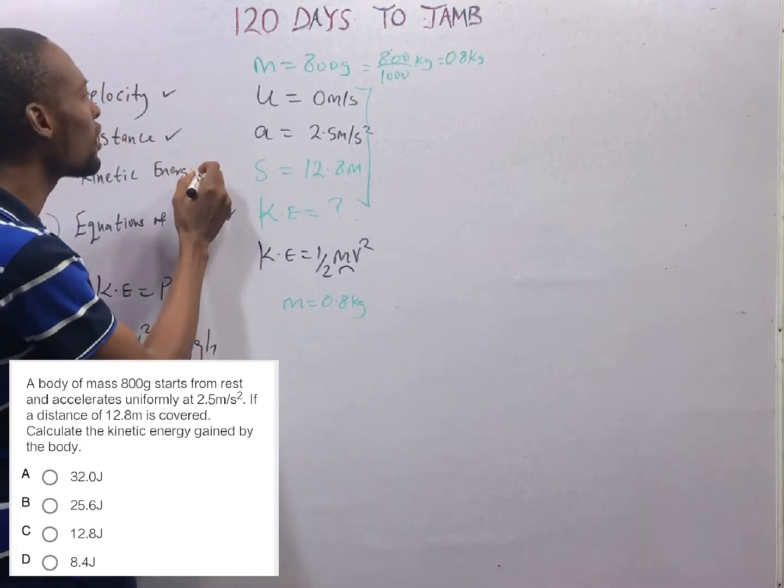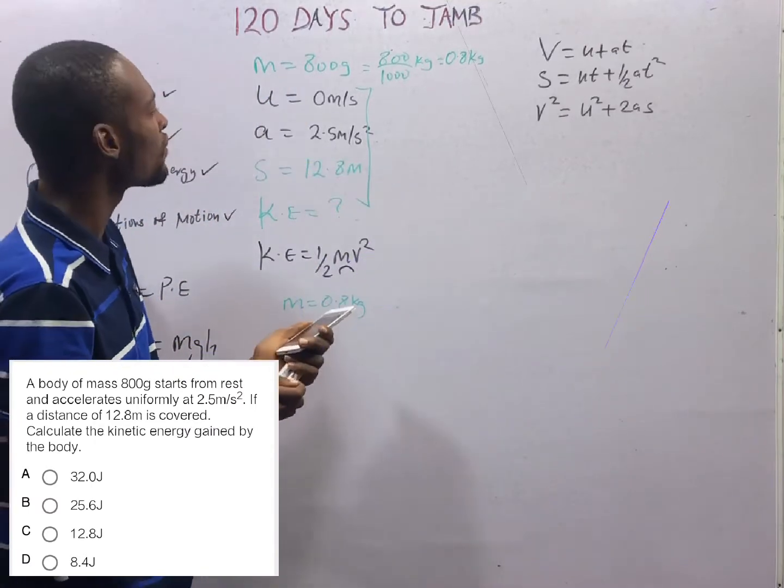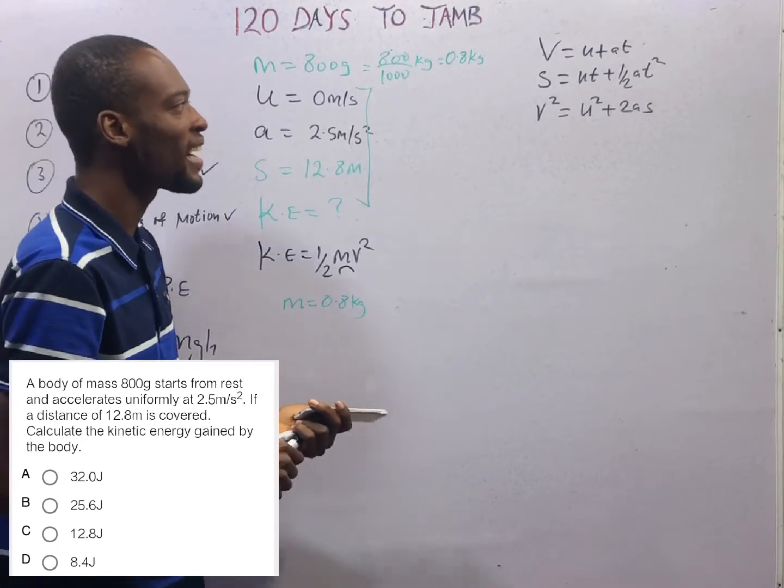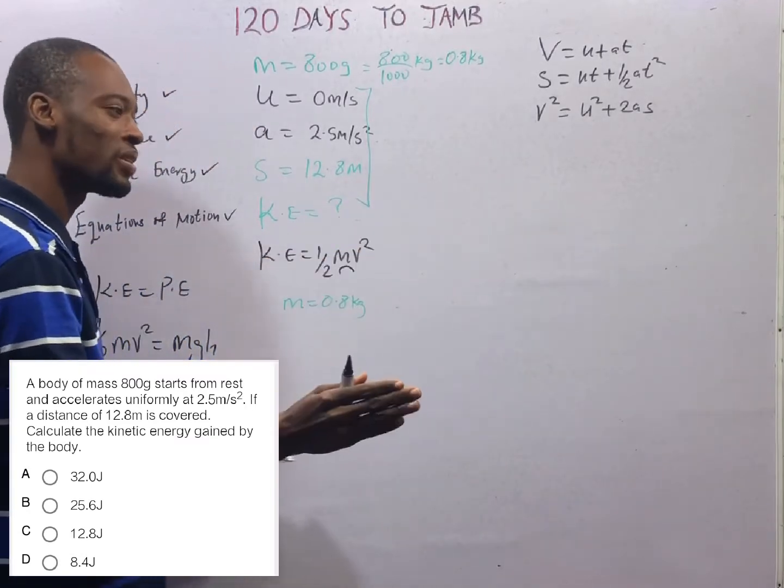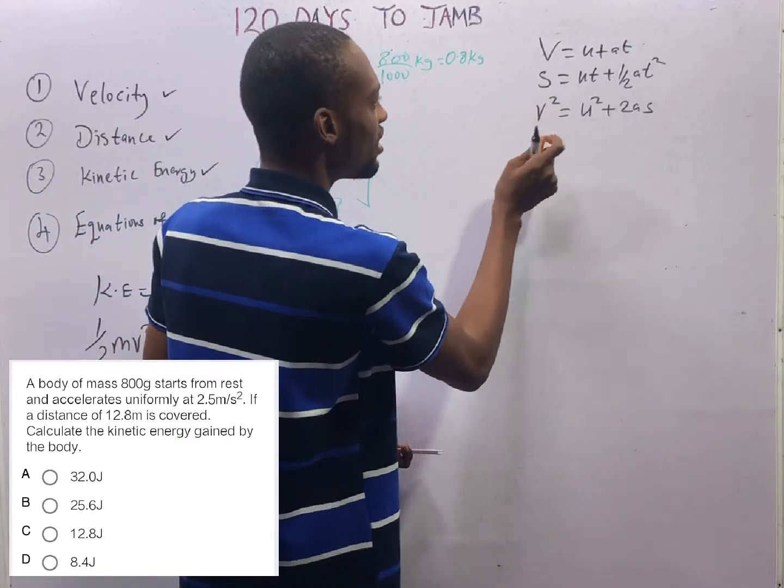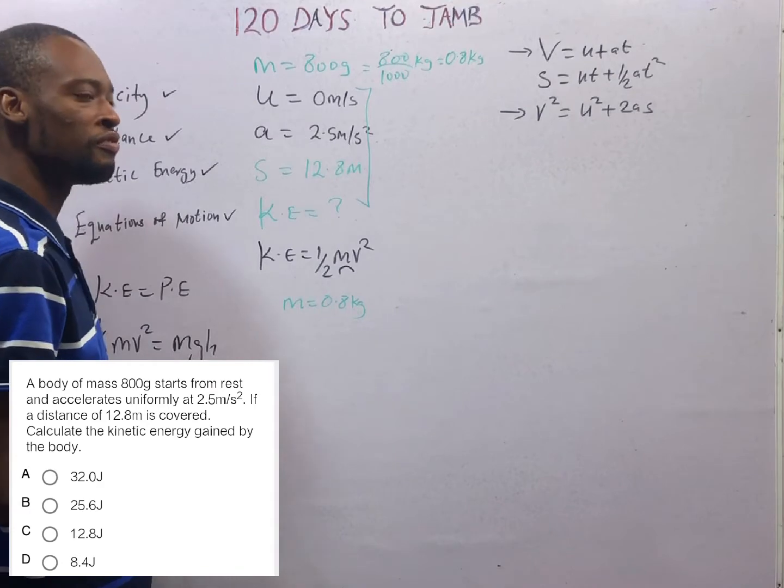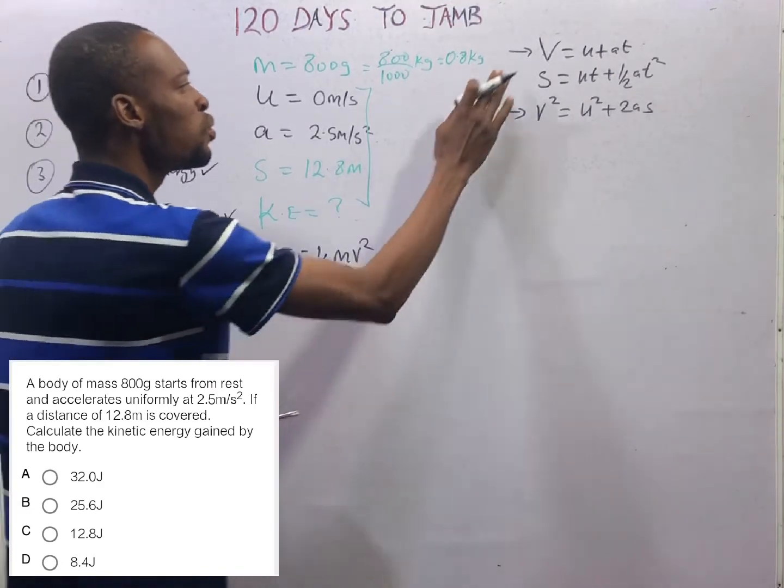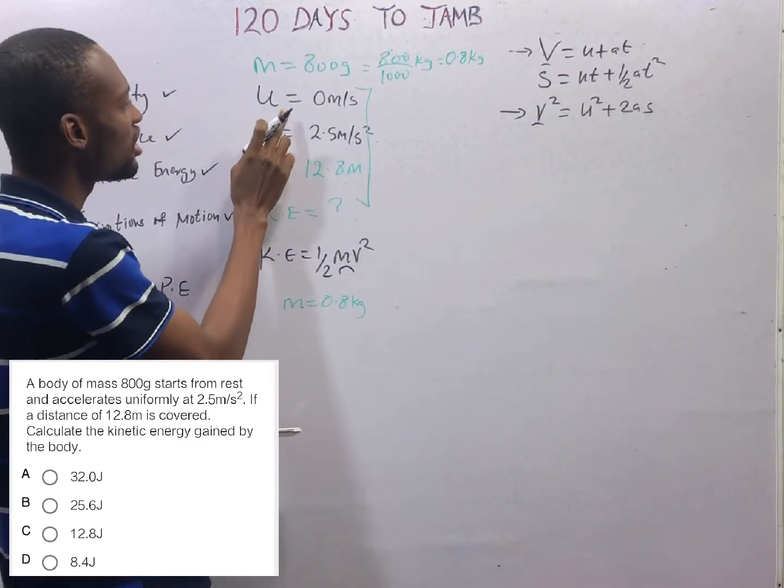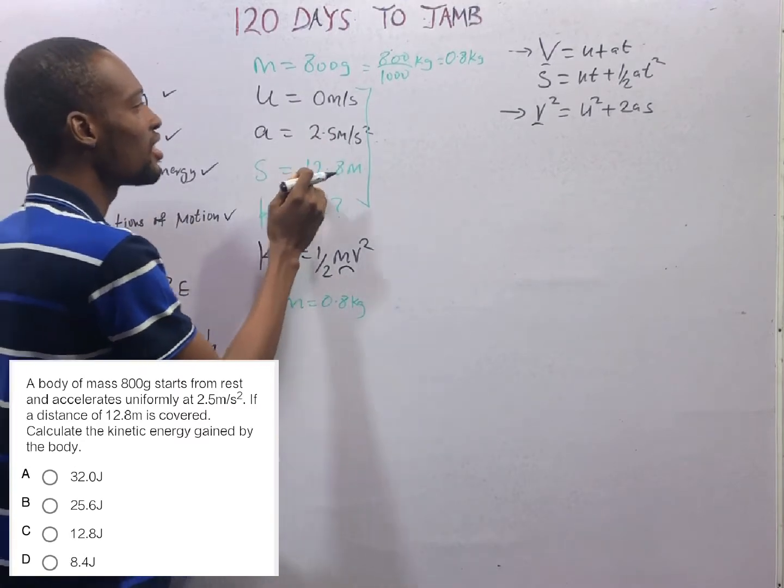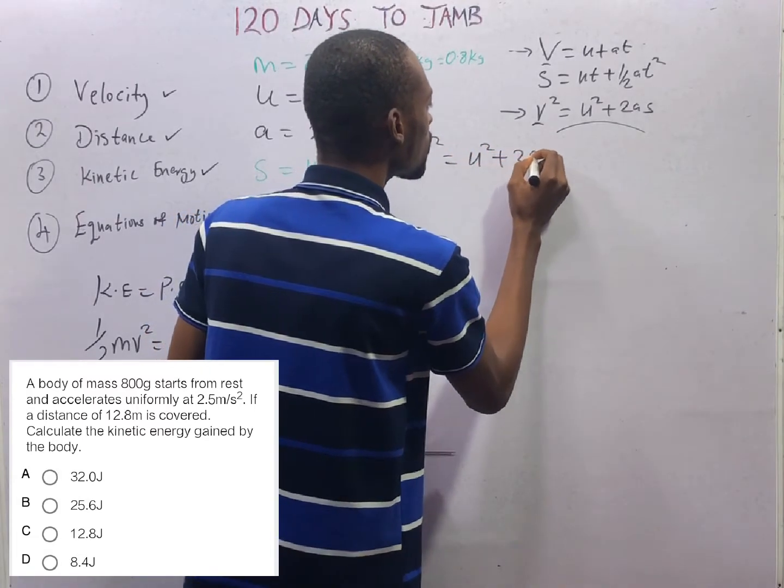Or you can find the formula connecting velocity, acceleration, and distance. Now, which of the following equations can help us find final velocity? Out of these equations, only these can help us find final velocity v. Which of them have initial velocity, acceleration, and distance? It is simply this. So v² = u² + 2as.